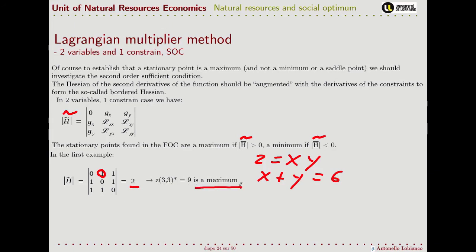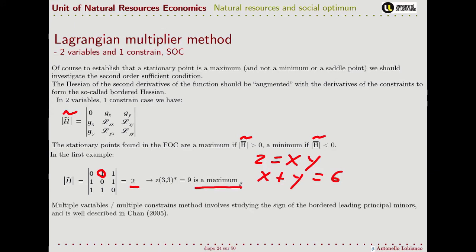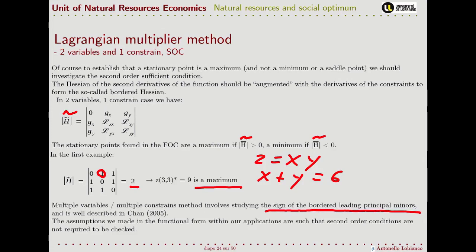Things become more complicated when there are more than two variables or more than one constraint, because to determine the nature of the stationary point we need to study the sign of the bordered leading principal minors — a sequence of determinants. This method is fully described in Chiang's book, 'Fundamental Methods of Mathematical Economics.' In economics and natural resource economics, we sometimes set up our problems in a way that we do not actually need to check the second-order conditions, because we make assumptions about the functional forms of our applications such that these are automatically satisfied.